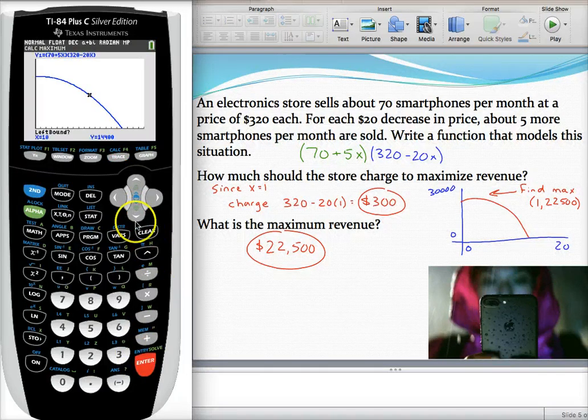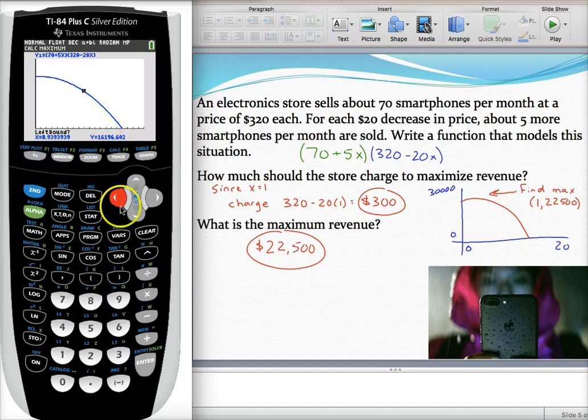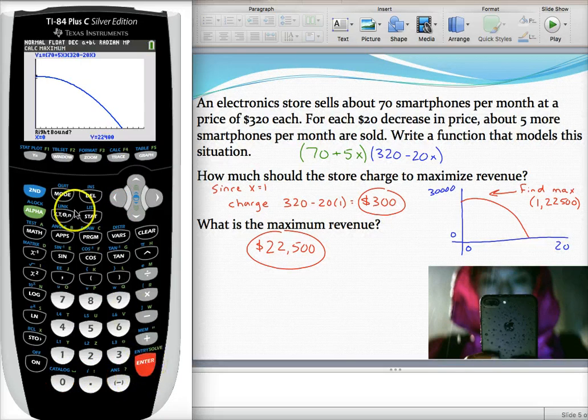And they're going to give you three questions, left bound, right bound, and guess. So I know my high point occurs way over here. I can either arrow over or if you're lazy, here's a little quick trick. Type in zero. I'll make my left bound zero. So it's right there. And it moved my cursor over so I didn't have to click as many times. Cool little trick.